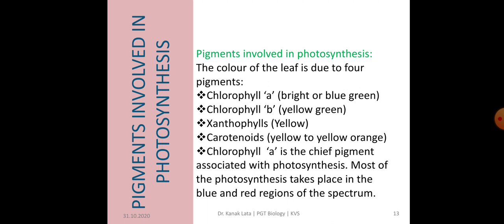These pigments have an ability to absorb light at specific wavelengths. Chlorophyll A is the chief pigment associated with photosynthesis. Most of the photosynthesis takes place in the blue and red region of the spectrum, but some photosynthesis does take place at the other wavelengths of the visible spectrum.